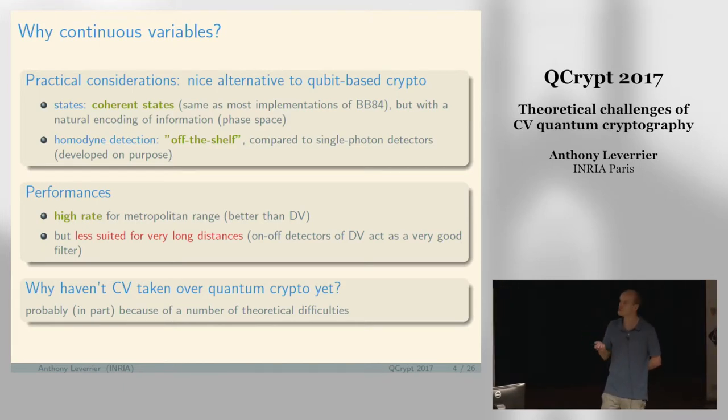The measurement that you use is called homodyne detection, so you don't need photon counters, you just need off-the-shelf coherent detection that you can buy.